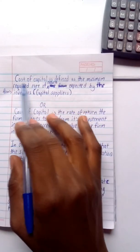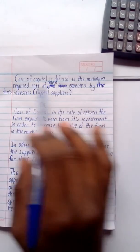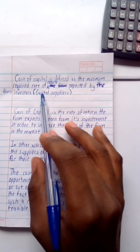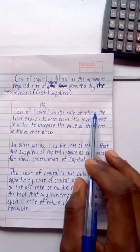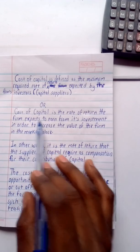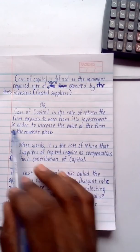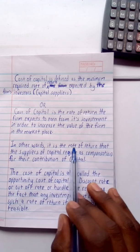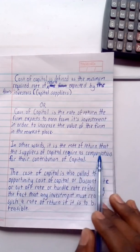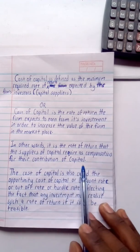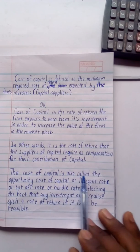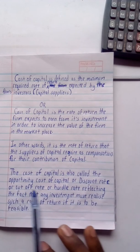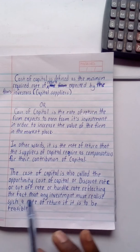Looking at cost of capital by definition, cost of capital is defined as the minimum required rate of return expected by the firm's investors, that is to say the capital suppliers. Or cost of capital is the rate of return the firm expects to earn from its investment in order to increase the value of the firm in the marketplace. In other words, it is the rate of return that the suppliers of capital require as compensation for their contribution of capital. The cost of capital is also called the opportunity cost of capital, or the discount rate, or cutoff rate, or hurdle rate, reflecting the fact that any investment must realize such a rate of return if it is to be feasible.